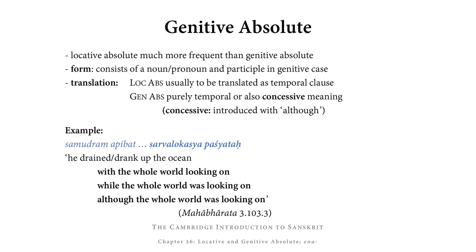To look at an example: samudram apibat sarvalokasya paśyataḥ. Sarvalokasya is the genitive of sarvaloka, meaning 'the entire world' or 'the whole world.' Paśyataḥ is the genitive singular masculine, agreeing with sarvalokasya, of paśyat, the present active participle of dṛś, meaning 'to see.' So this is 'whole world' genitive, 'looking on' genitive, and it can be translated as 'he drank up the ocean with the whole world looking on,' or as a temporal clause 'while the whole world was looking on,' or as a concessive clause 'although the whole world was looking on.'